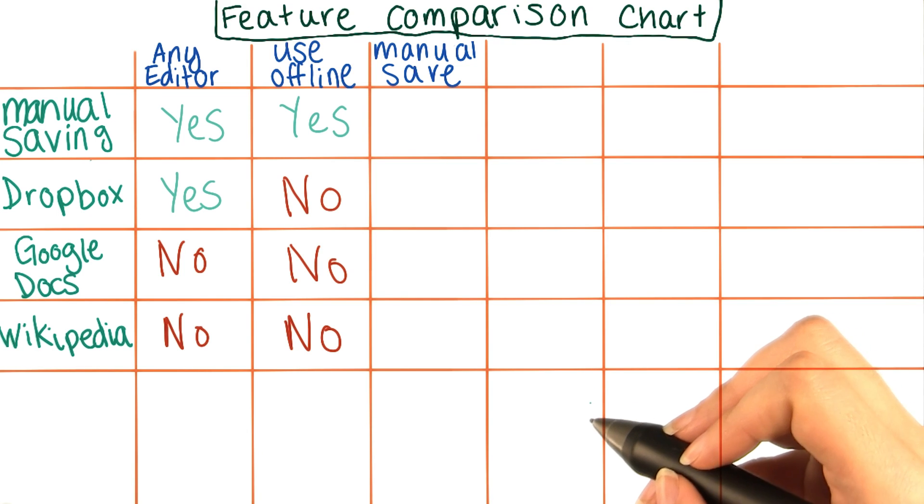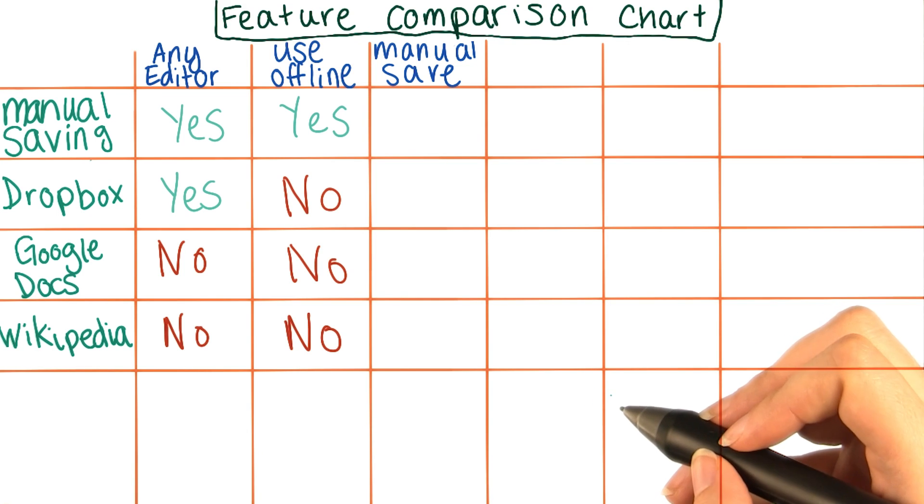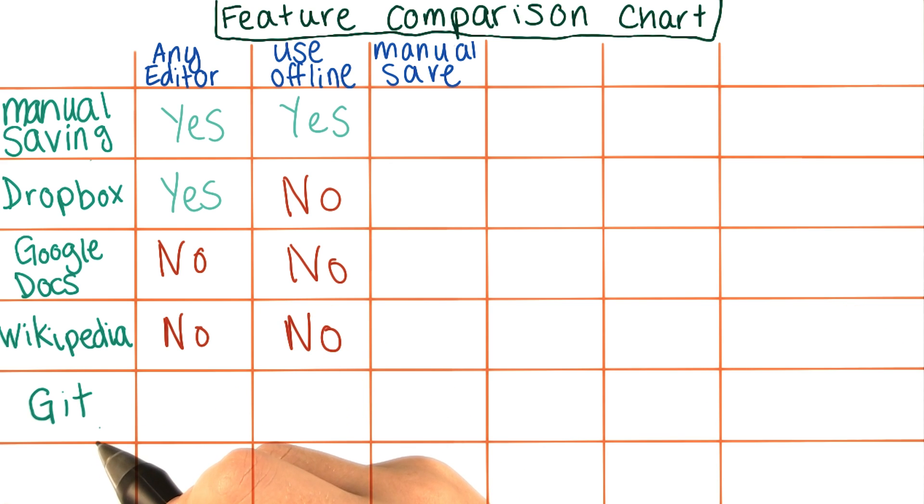Let's go back to adding things to our chart. Remember from the intro video that this course was going to involve a version control system called Git? You might be wondering how Git got its name.